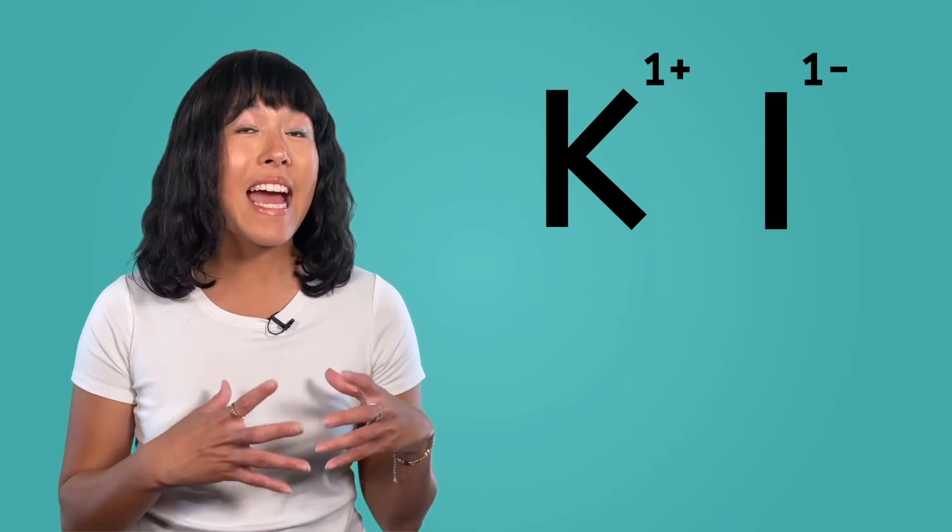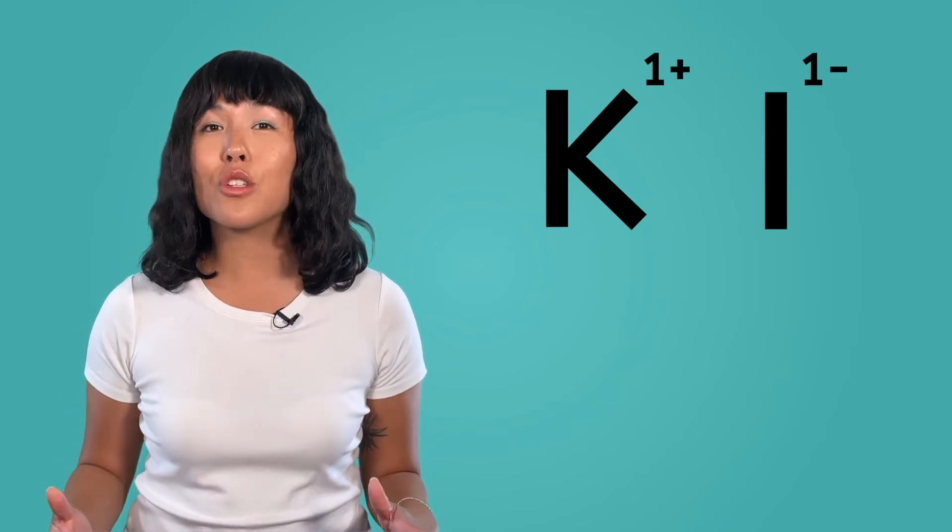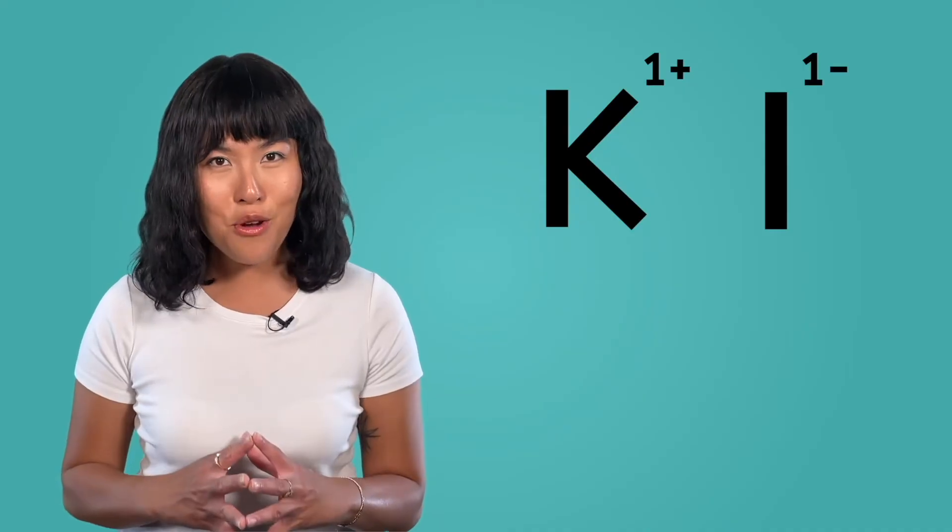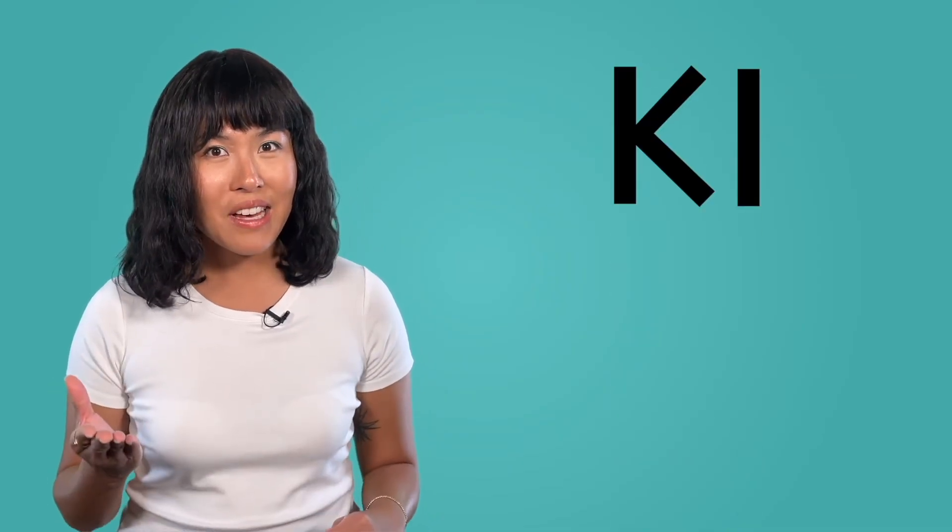Once this transfer happens, potassium becomes an ion with a positive one charge, and iodine becomes an ion with a negative one charge. These opposite charges cause the ions to be attracted to one another, forming an ionic bond. To write the chemical formula for this compound, you write the metal first, K, followed by the non-metal, I. Since we only used one atom of each element, there are no subscripts, so the formula is KI.